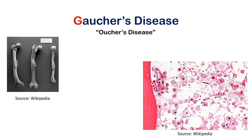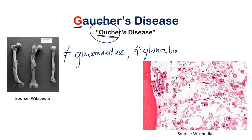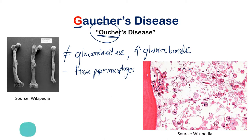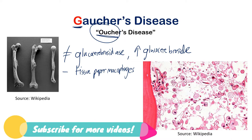Gaucher's disease — I pronounce it as 'Oucher's disease.' The enzyme deficient here is glucocerebrosidase, and the buildup is glucose cerebroside. A defining characteristic on histology is tissue paper macrophages. I remember this because 'Oucher' sounds like 'ouch' — like you've hurt yourself and you're crying, so you'd need a tissue: tissue paper macrophages.